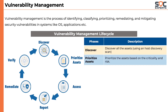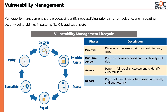The second phase is prioritizing assets, where we prioritize based on criticality and risk level. For example, for an e-commerce company, their web server is more critical than their internal file server. Defining priority helps decide scan frequency and patching speed. The third phase is assessment — this is where the actual vulnerability scanning happens, using vulnerability scanners to identify vulnerabilities in the assets. The identified vulnerabilities are then reported based on criticality and risk level.